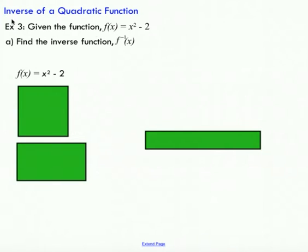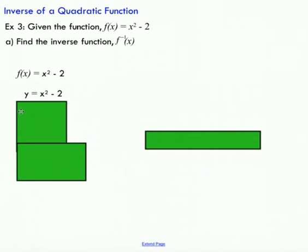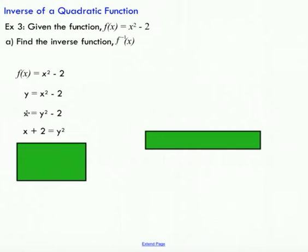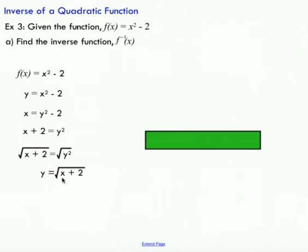Next, I want to look at how to find the inverse of a quadratic function — a simple one where I'm just shifting the original graph down by two units. Step one: rewrite f(x) as y equals x squared minus two. Step two: interchange x and y. Step three: solve for y — add two to the other side, then take the square root of both sides. We end up with y equals the square root of x plus two.